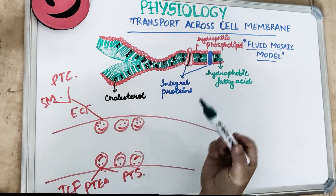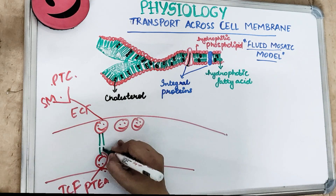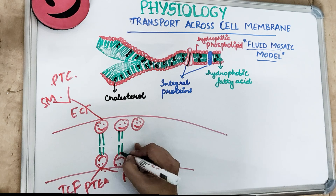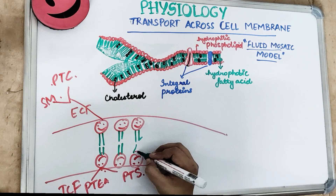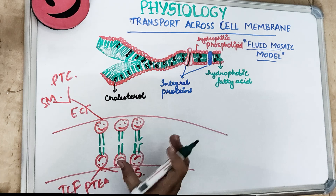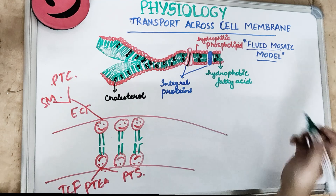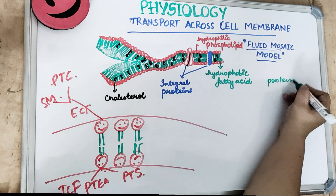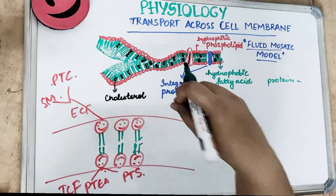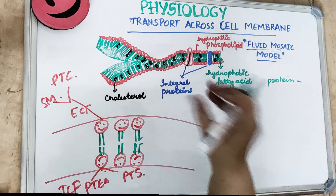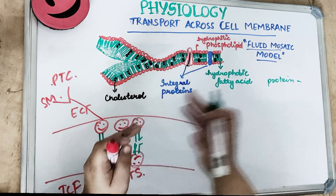The phospholipid bilayer has fatty acid legs - the phospholipid head with the fatty acid leg. The straight ones are the saturated fatty acids and those with bent legs are the unsaturated fatty acids. We mostly have the saturated kind of fatty acids.